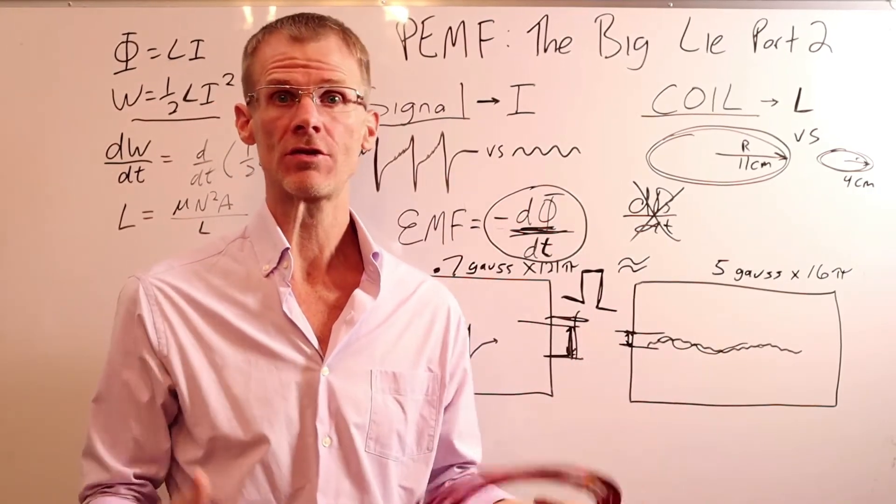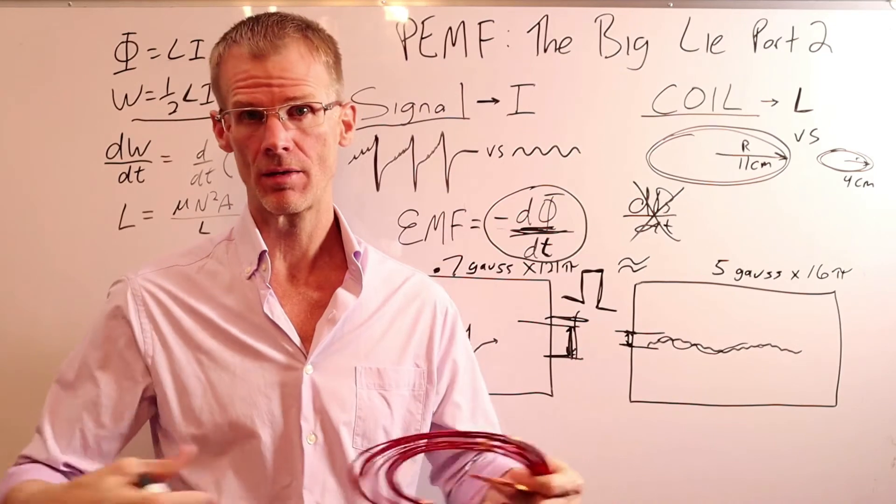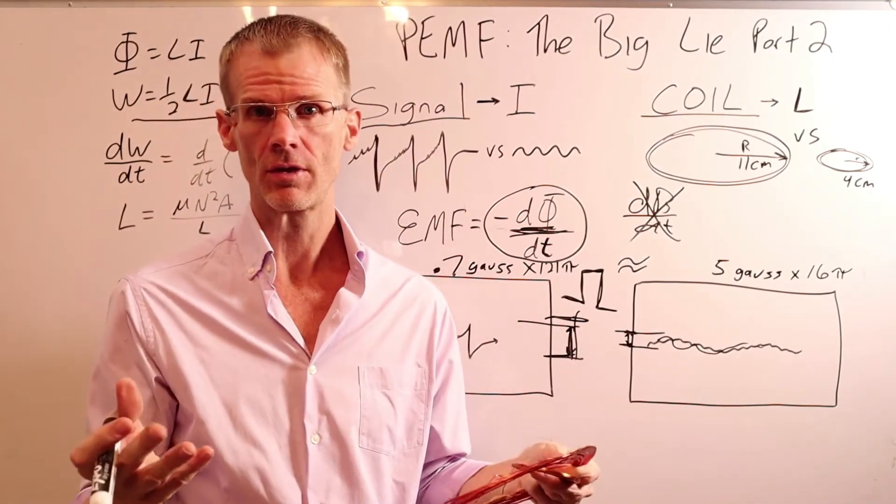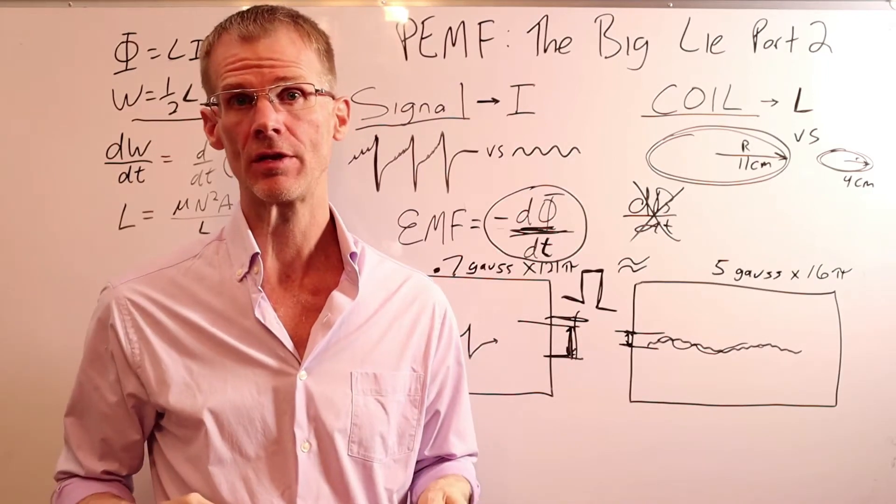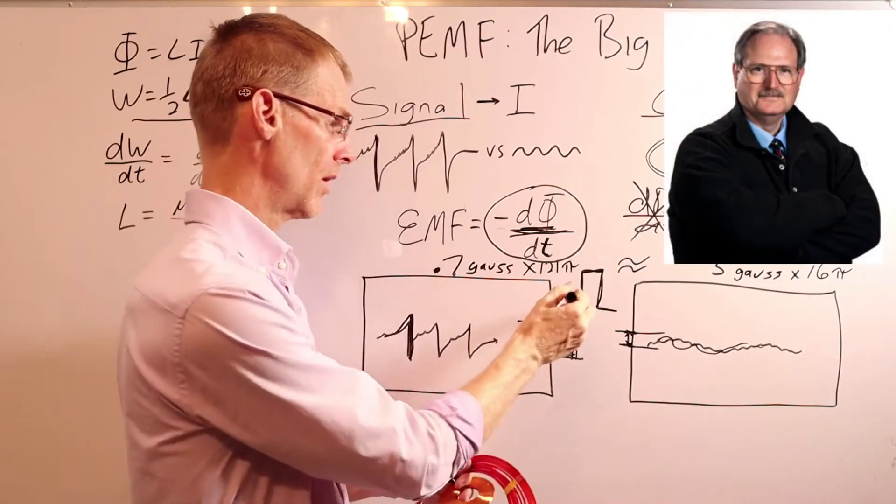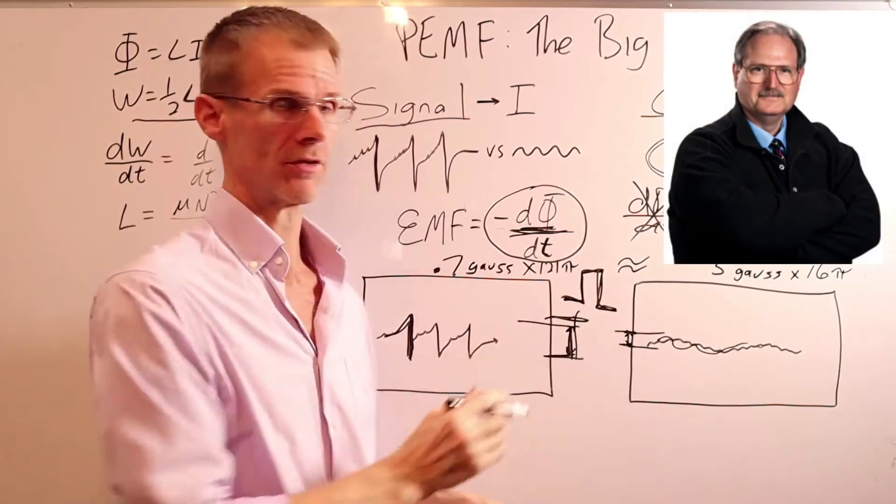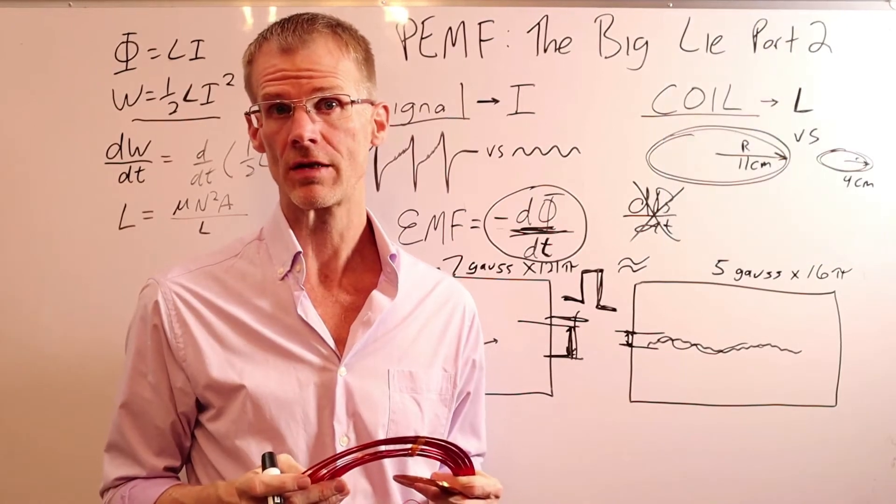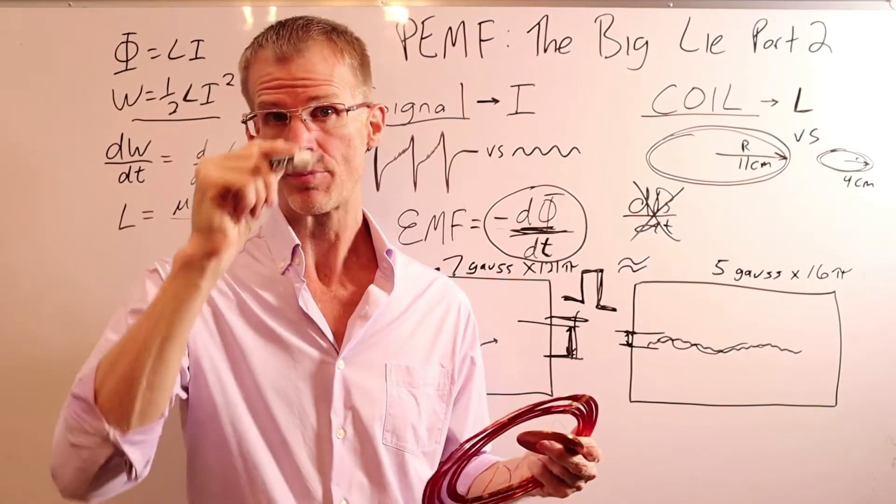And here's the thing. The original research done by Andrew Bassett on bones, they used a sawtooth waveform. And what Andrew Bassett found was that the sawtooth was working better for bone stimulation than any other waveform he was looking at. And also, the square wave, Dr. Goodwood at NASA found that the square wave was also one of the most effective, or in his study, the most effective signal, because of the rapid rise and fall.